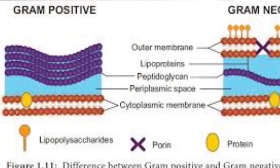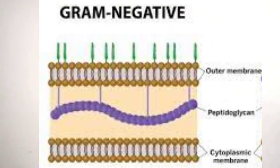Gram-positive and gram-negative bacteria stain differently because of fundamental differences in their cell wall composition. For gram-positive bacteria, the cell wall comprises 60 to 90 percent peptidoglycan — a protein and sugar component — and a lesser amount of lipids. For gram-negative bacteria, the cell wall comprises only 20% peptidoglycan, with the rest consisting of phospholipids.